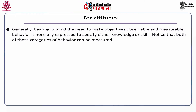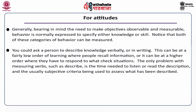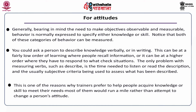Generally, bearing in mind the need to make objectives observable and measurable, behavior is normally expressed to specify either knowledge or skill. Both of these categories of behavior can be measured — you could ask a person to describe knowledge verbally or in writing, at a fairly low order of learning where people recall information, or at a higher order where they respond to what-check situations. The only problem with measuring verbs such as 'describe' is the time needed to listen or read the description and the usually subjective criteria used to assess what has been described. This is one of the reasons why trainers prefer to help people acquire knowledge or skill to meet their needs, rather than attempt to change a person's attitude.